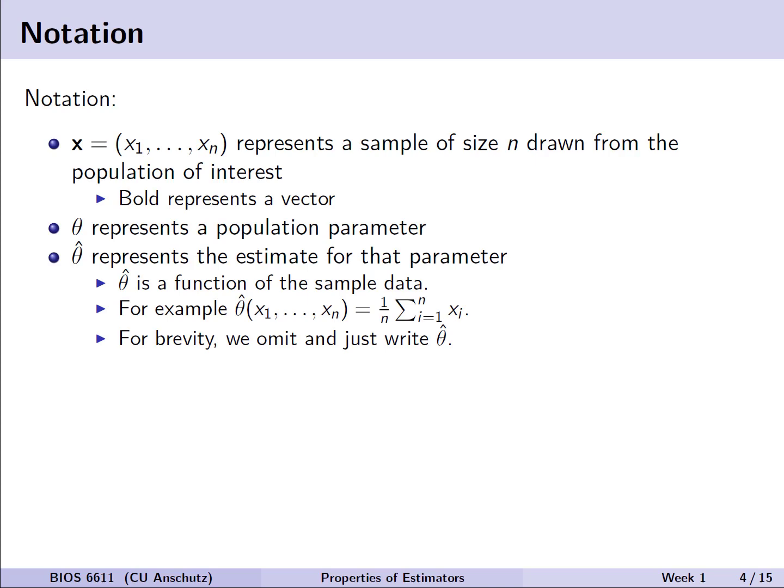So let's start with some notation. Let's let this little bold x represent a vector of observations and we'll denote these as x sub 1 up to x sub n. So we have a sample of size n drawn from our population of interest. We'll let theta represent a population parameter, and because it's in the population it represents the true value of that parameter. However, we know that we rarely measure the entire population and instead try to estimate the population parameter, usually with some random sample. That we will represent by this theta hat we see right here. Theta hat is going to be a function of our sample's data. So, for example, if we have theta hat x1 to xn here, maybe we're calculating the sample mean. And so we take the sum of our observations, x sub i, and we divide that by n. Now, most times instead of writing this entire piece here, we'll just instead write theta hat.